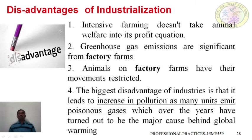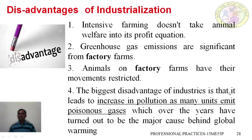Disadvantages of industrialization: intensive farming does not take animal welfare into its profit equation. Greenhouse gas emissions are significant from factory farms. Animals on factory farms have their movement restricted. The biggest disadvantage of industries is that it leads to an increase in pollution as many units emit poisonous gases.